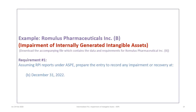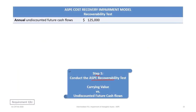We now proceed to Requirement 1B: recording any impairment or recovery at December 31st, 2022. Note that recoveries are not permissible under ASPE, which we will address shortly. We go back to the recoverability test — carrying value versus undiscounted future cash flows. In 2022, the drug is more successful, and the undiscounted future cash flows are now determined to be $125,000 per year.